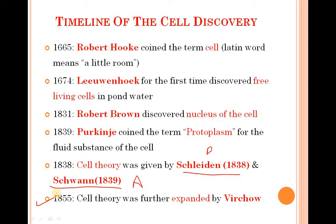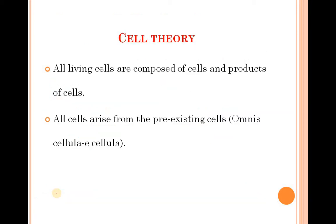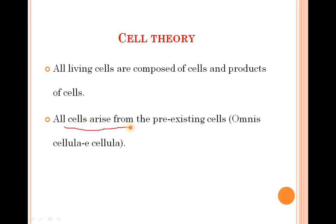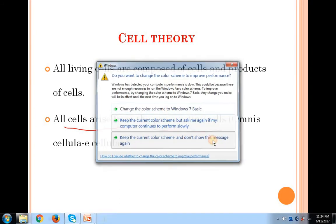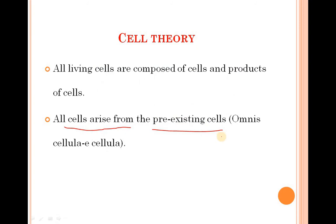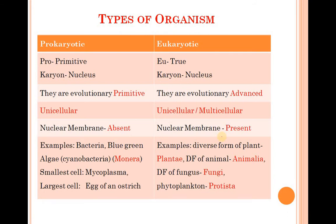Virchow explained how cell division took place. The cell theory states that all living organisms are composed of cells and they are made up of the products of cells. Virchow further stated that all cells arise from pre-existing cells. For this he used the phrase 'Omnis cellula e cellula', which means all cells come from cells.